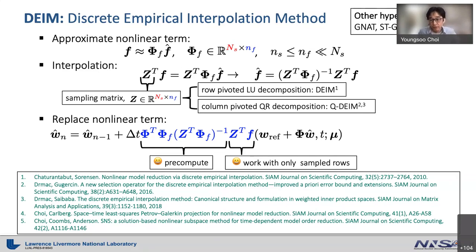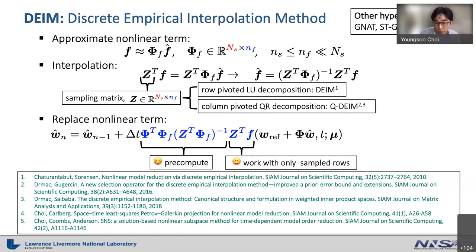There are many variants of DEIM — GNAT, NSD-GNAT, and SNS — but the main hyperreduction machinery follows the same paradigm. The traditional linear subspace ROM can accurately accelerate various physical simulations, achieving speedups of 10 to 1000 with relative errors less than 1% or 5%.